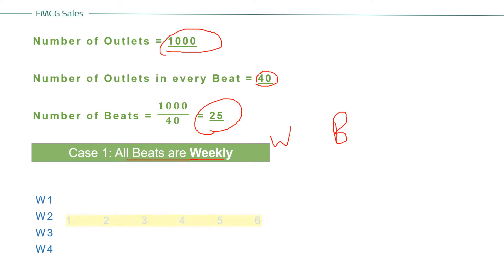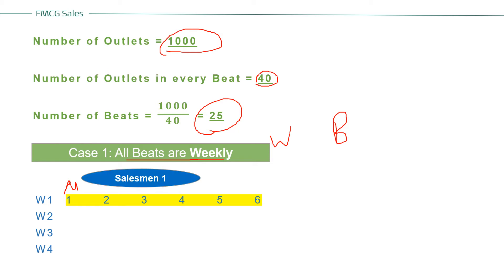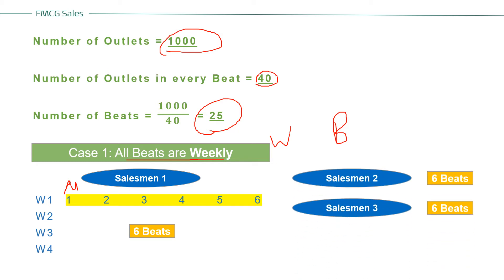There are four weeks in the month, each with six working days. Six working days give six opportunities to cover beats — Monday one beat, Tuesday another, through to Saturday — so six beats per week per salesman. If all beats are weekly, each salesman covers six beats per month. Salesman 1 covers 6, Salesman 2 covers 6, Salesman 3 covers 6, and Salesman 4 covers 6, totaling 24 beats for four salesmen.